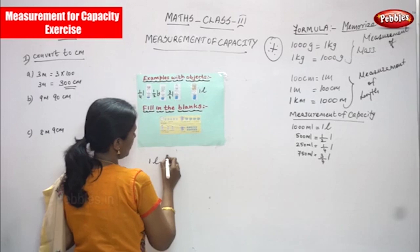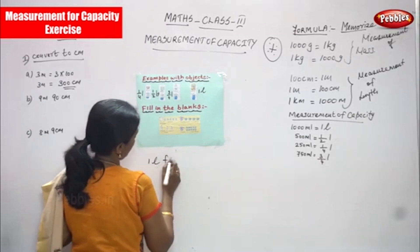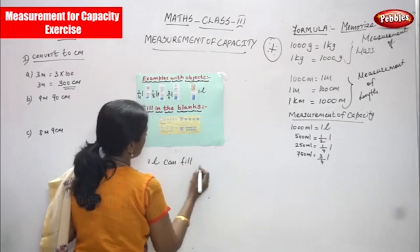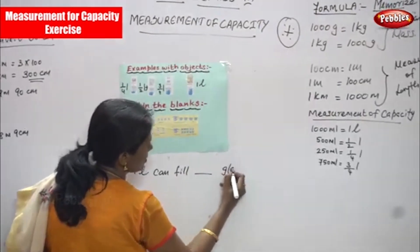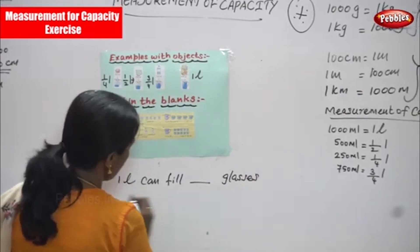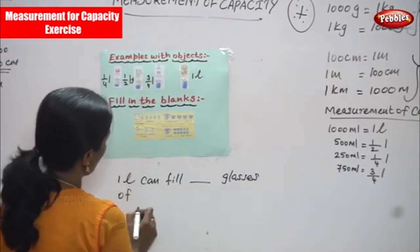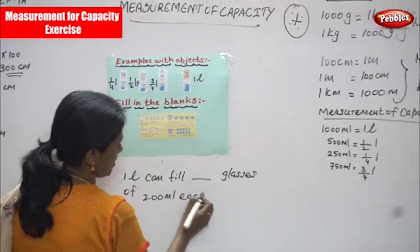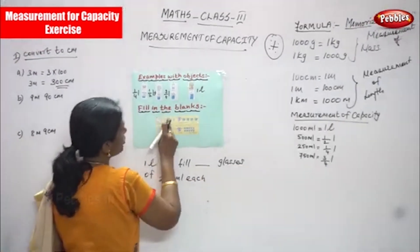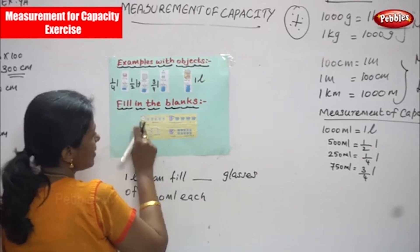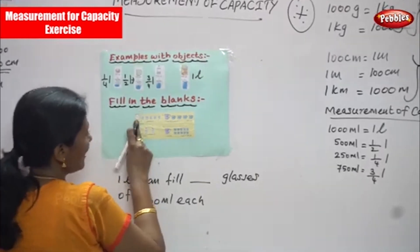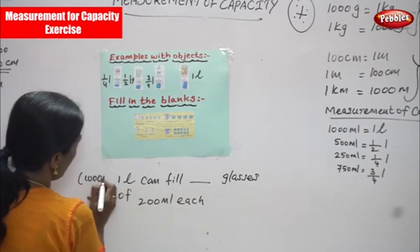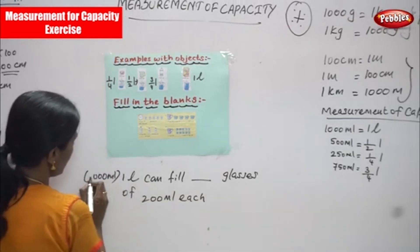So, can fill dash glasses of 200 ml each. One liter is equal to nothing but thousand ml. One liter is equal to what? Thousand ml.